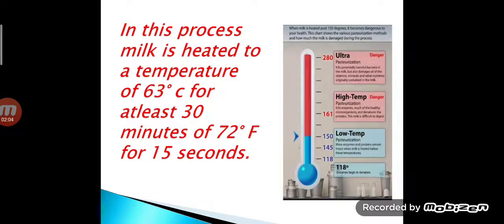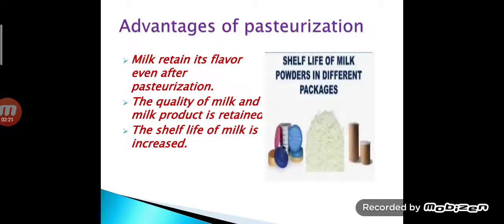Microorganisms multiply by cell division and cause spoilage of milk. In this process, milk is heated to a temperature of 63 degrees Celsius for at least 30 minutes, or 72 degrees Celsius for 15 seconds. Now, the advantages of pasteurization: the first advantage is that milk retains its flavor even after pasteurization.